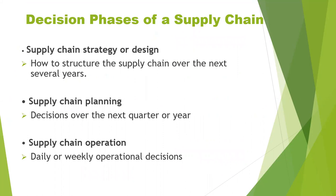The decision phases fall into three categories depending on the frequency of each decision and the time frame during which a decision phase has an impact. The first phase is Supply Chain Strategy or Design, used to structure the supply chain over the next several years. The second phase is Supply Chain Planning, used to take decisions over the next quarter or year. The third phase, Supply Chain Operation, concentrates on daily or weekly operational decisions.